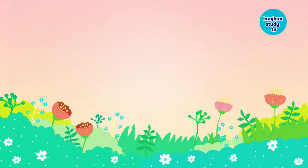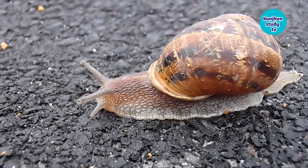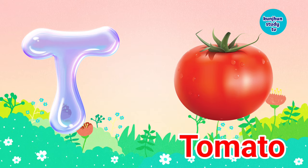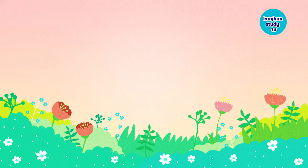S, S for Snail, Snail means Ghonga. T, T for Tomato, Tomato means Tamatar. U, U for Unicorn, Unicorn means Unicorn.